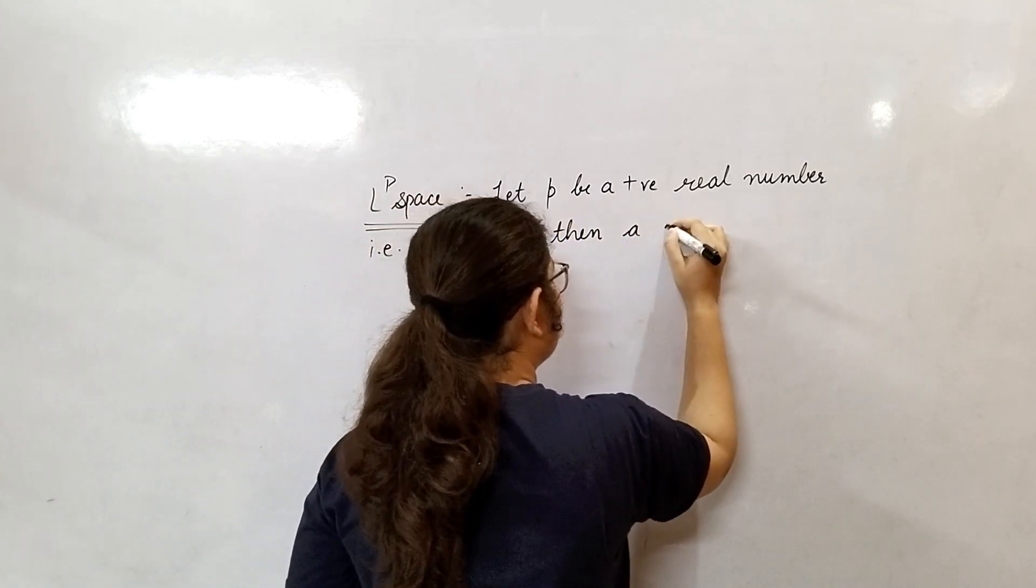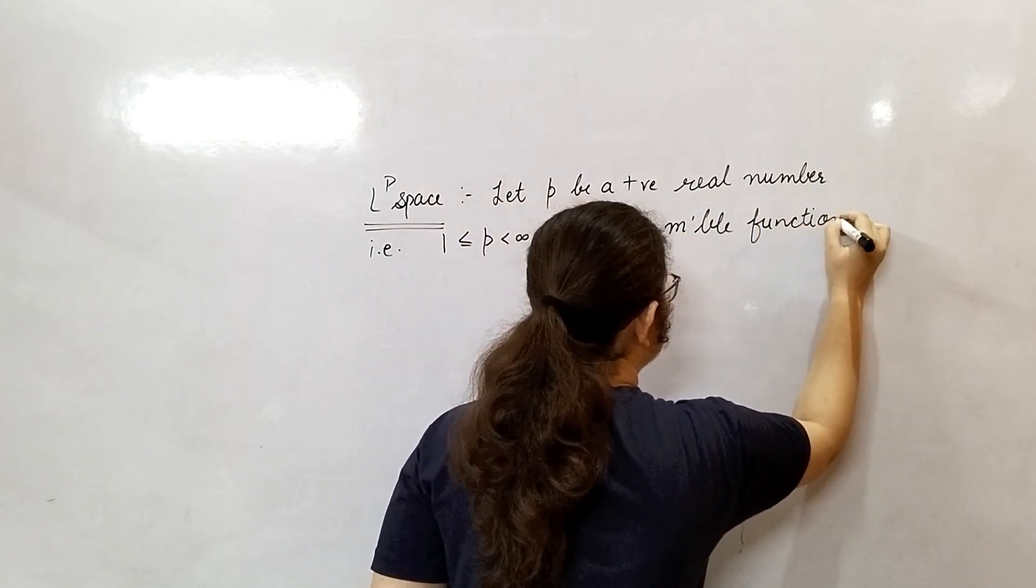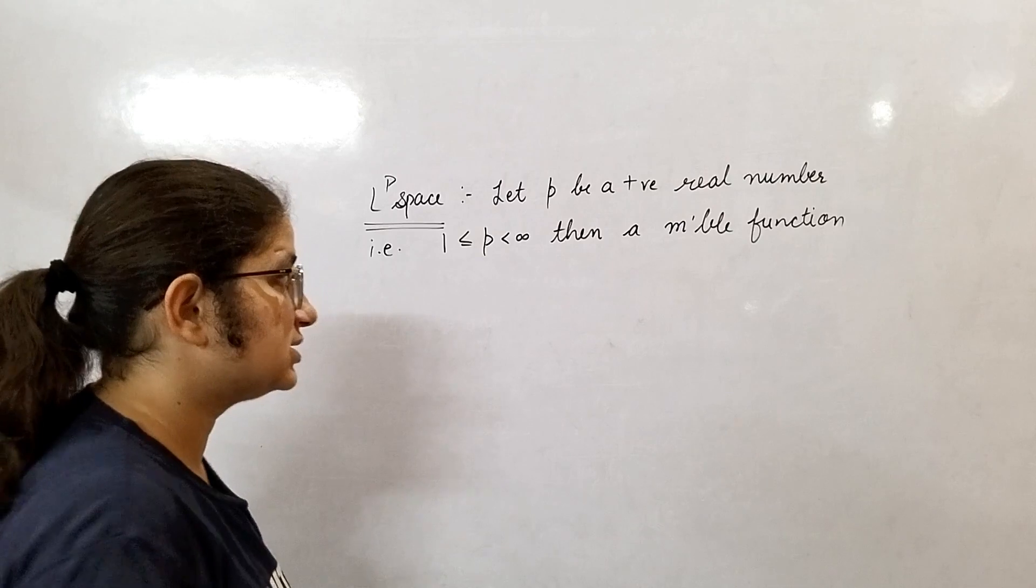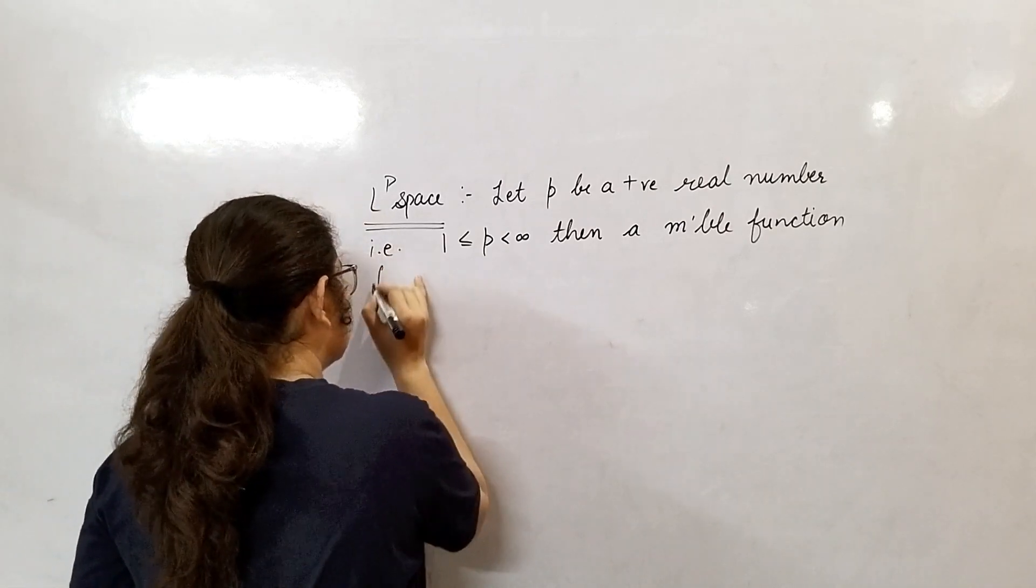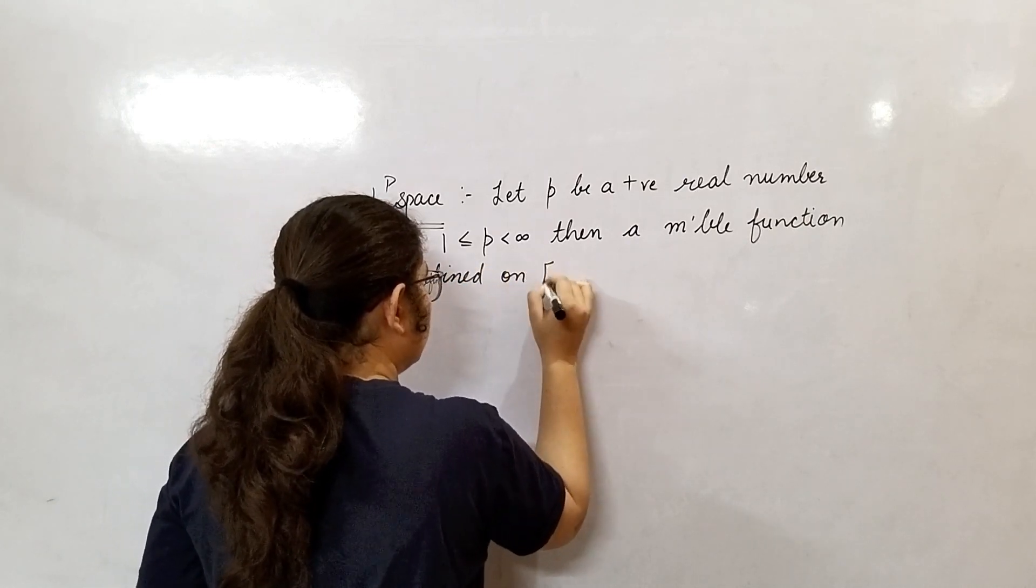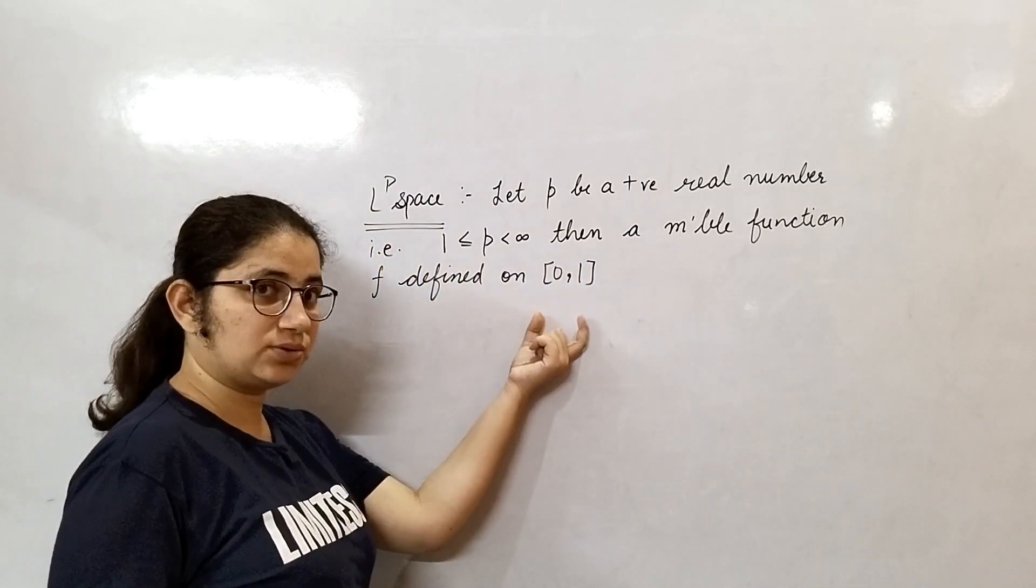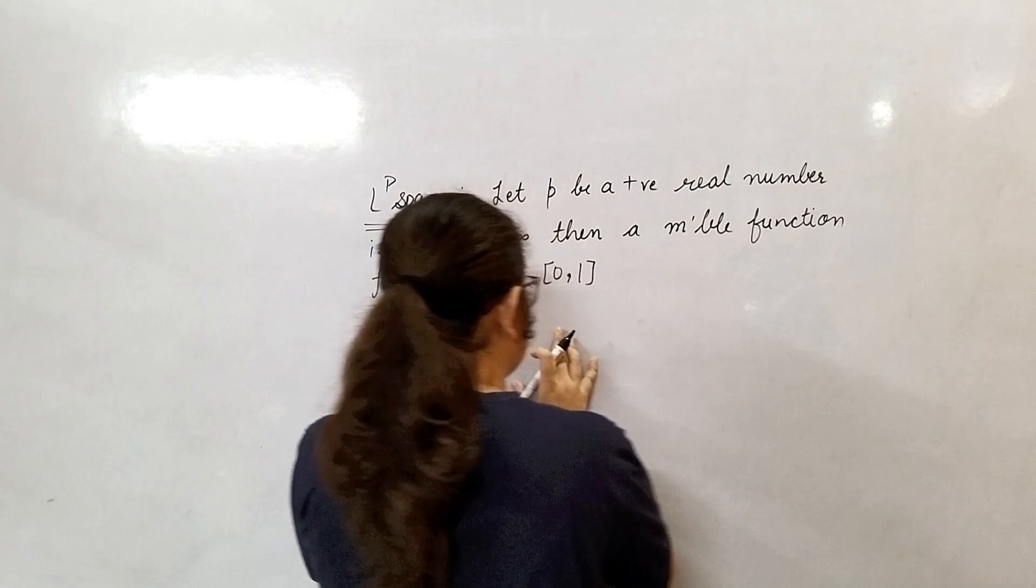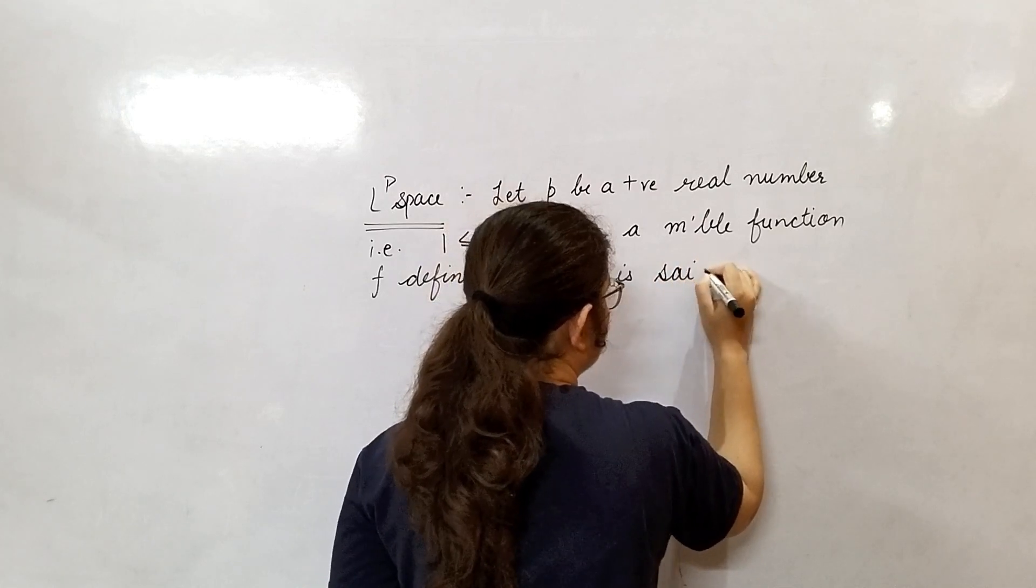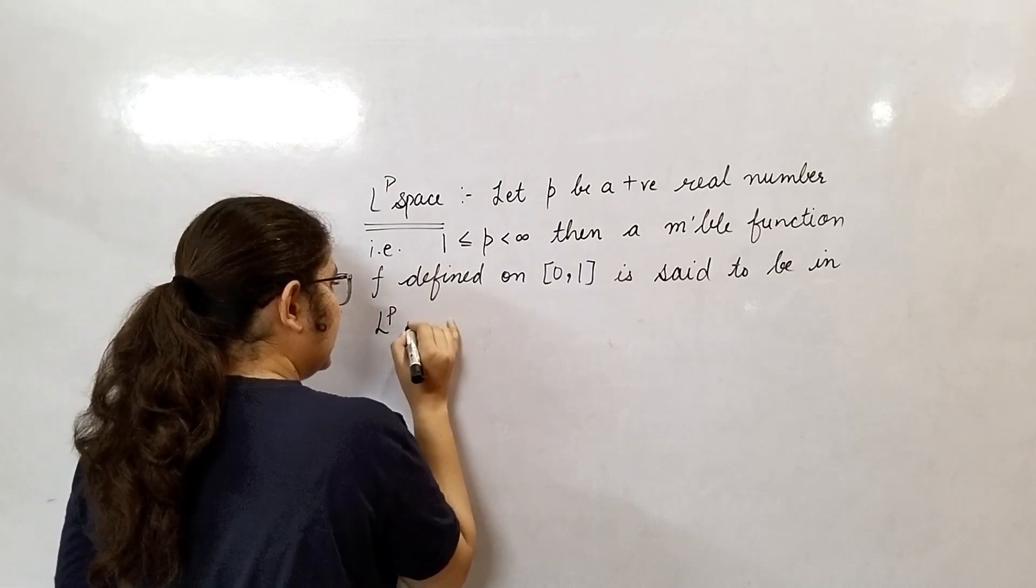Then a measurable function. Please note that in LP space you will every time deal with measurable functions. The function you consider is measurable, defined on the interval 0, 1. What is the domain of that function? Domain of that function is 0 to 1, the closed interval 0 to 1, and is said to be in LP.